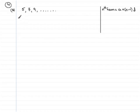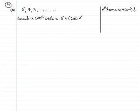So we can then say that the amount in the 200th week—let's give it an intro—equals A, which is the first term, 5 plus n minus 1. So n is 200, so that's 200 minus 1 times the common difference.